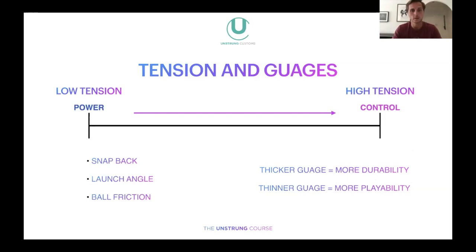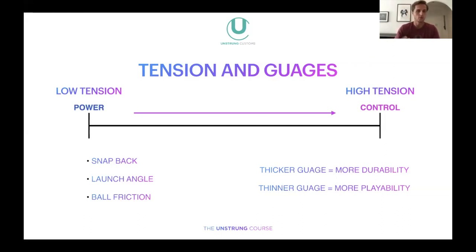There isn't a set way of doing things — whether for strings, rackets, technique, or how you should play. That's why tennis is so great: it allows us to experiment with so many different variations. I hope that cleared up tensions, gauges, and the effects of stringing looser or tighter depending on gauge thickness. If you've never heard of snapback or launch angle, perhaps next time feel those out. I'll come back to launch angle and snapback when we talk about rackets and string pattern, since a big part of the setup is also the racket's string pattern.